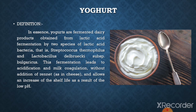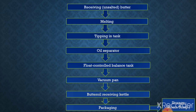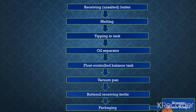In this way we have studied the butter oil manufacturing process in detail, in which various unit operations are involved: receiving, melting, tipping tank, oil separator, float control balance tank, vacuum pan, butter oil receiving kettle, packaging, and storage. We have discussed all these operations in detail.